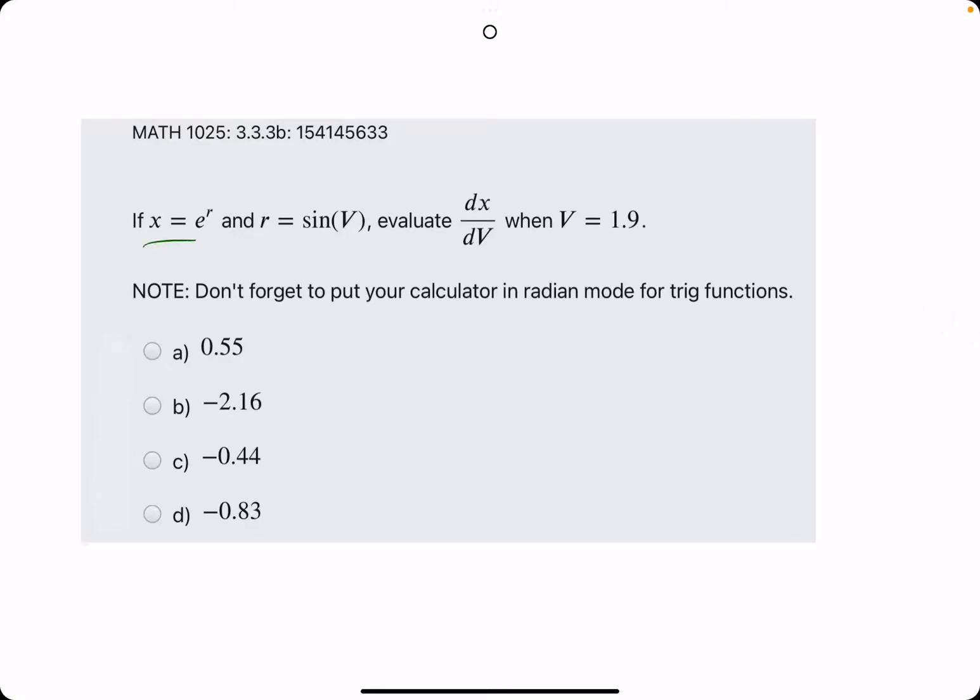Okie dokie. In this problem, we are given a function x and a function r, and they ask us to find dx over dv when v is equal to 1.9.